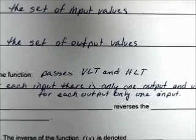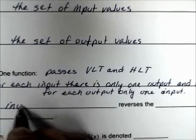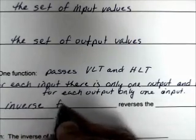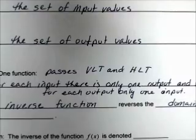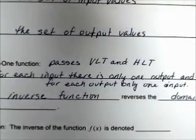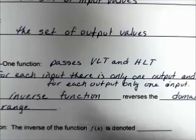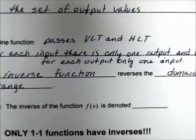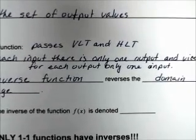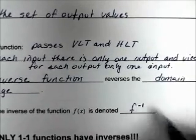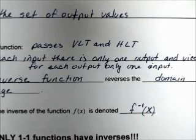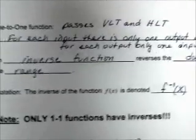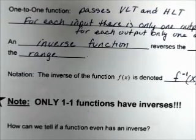An inverse function reverses the domain and the range. Notation: the inverse of the function f of x is denoted f inverse of x — it looks like an exponent of negative 1 between the f and the x, and it's read 'f inverse of x.' Note: only one-to-one functions have inverses.